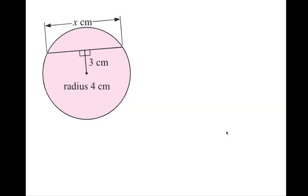Let's go on to another problem. Please draw this diagram in your notebook — it's very similar, but we're looking for a different thing. In the last problem we looked for the length of the segment from the center to the chord — the shortest distance. Now we're looking for the length of the entire chord. I'm going to label these points A, B, and M. M means midpoint, because we know by this theorem: when you have a perpendicular from the center to a chord, it bisects the chord. Therefore this must be the midpoint.